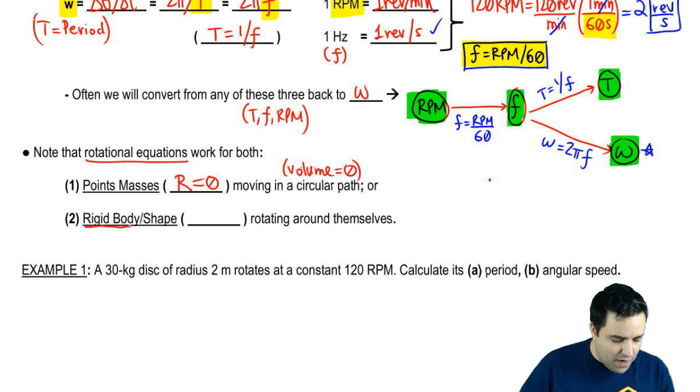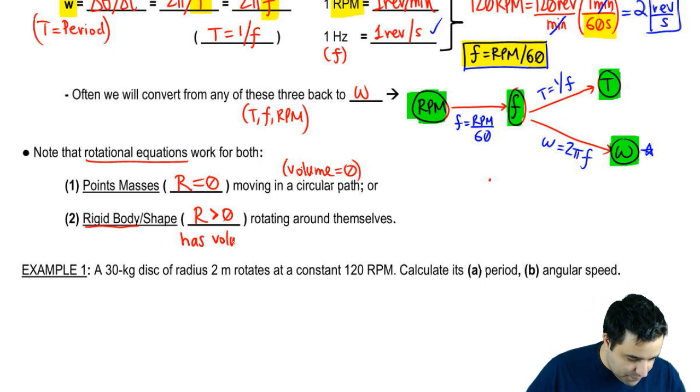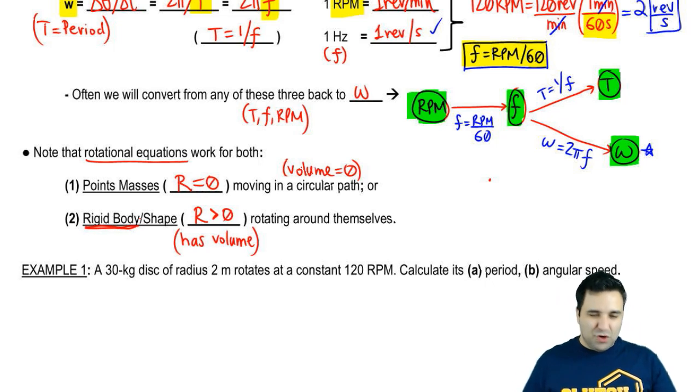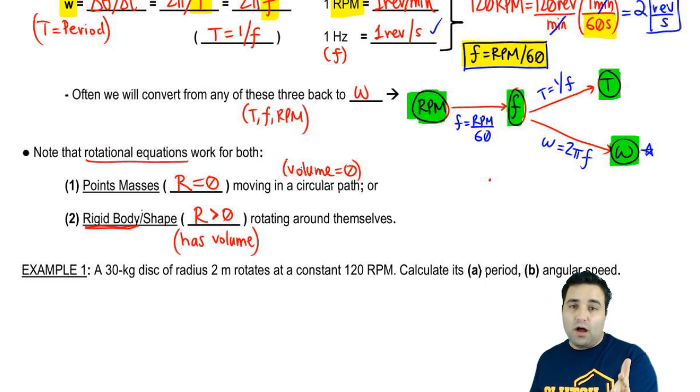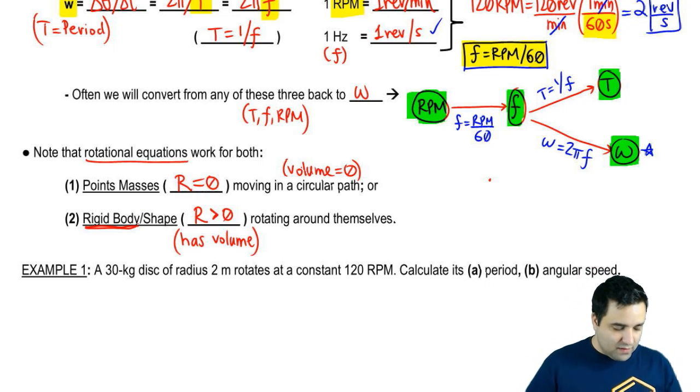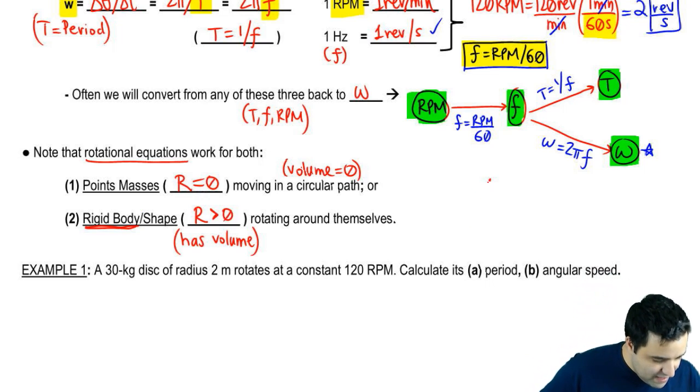The other one is when you have a rigid body, which is something where the radius is not zero, the radius is greater than zero, so it has volume. I refer to this as either a rigid body, that's the classic textbook name, or a shape. The reason why I like to think of it as a shape is because in these problems usually you will be told what the shape is. If I tell you you have a small object, that's a point mass. If I tell you you have a cylinder, usually I'll tell you what the radius is, and then you treat that a little bit separately.